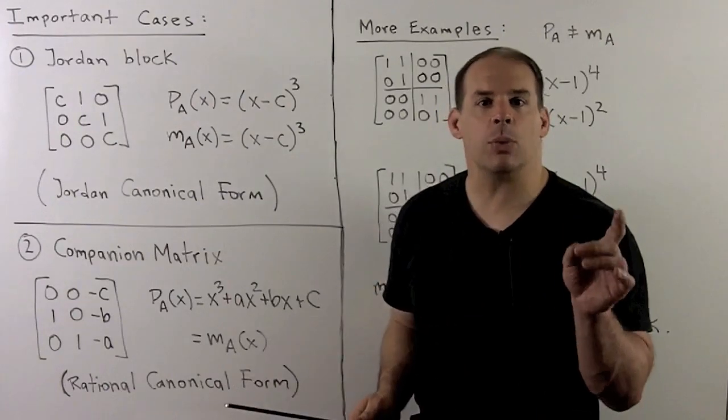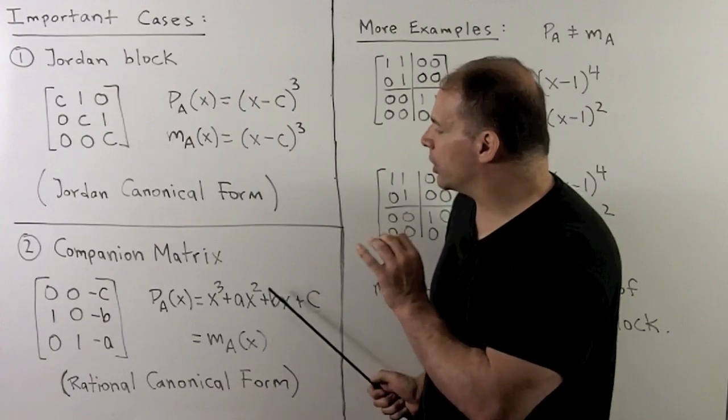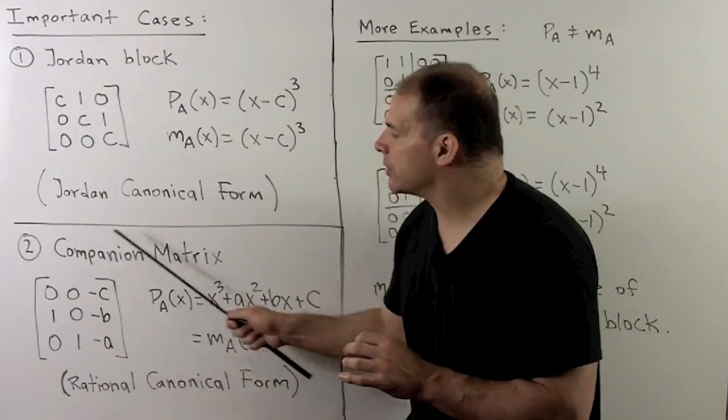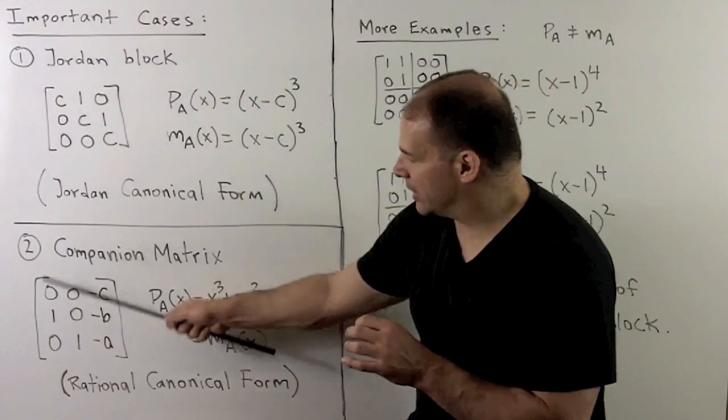We'll study these more when we do rational canonical form. We note here, if I want to convert to companion matrices, there's no problem, since I'll stay in the base field.